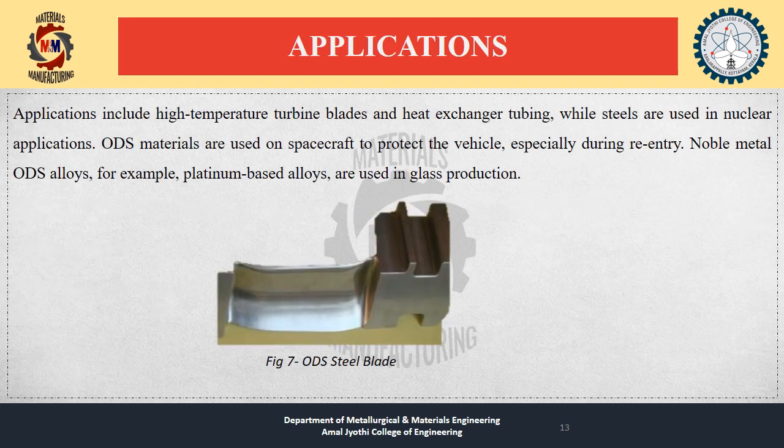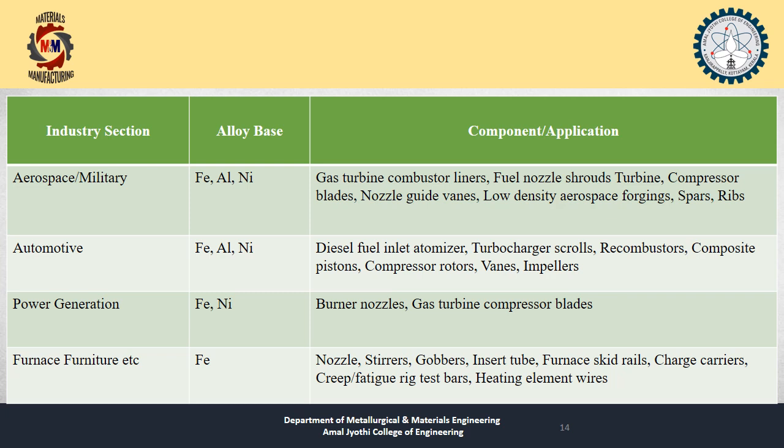The applications of ODS alloys include high-temperature turbines, turbine blades, heat exchangers, and exchanger tubing. ODS steels are used in nuclear applications, and ODS metals are used on spacecraft to protect the vehicle especially during reentry. Figure 7 shows an ODS steel blade, illustrating the use of ODS alloys in various industries.